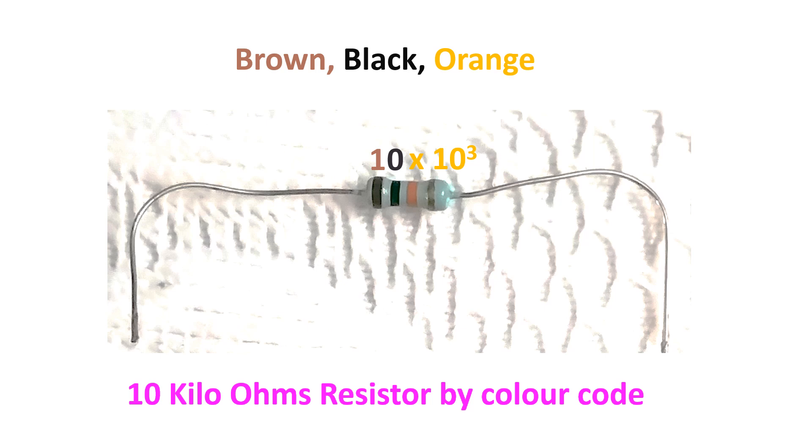A 10k resistor has a brown band in the beginning representing a color code of 1, followed by a black band representing 0, and then an orange band representing the multiplier of 1000 or 10 to the power of 3. So the value will be 10 times 1000, which equals 10,000 or 10 kilo ohms.